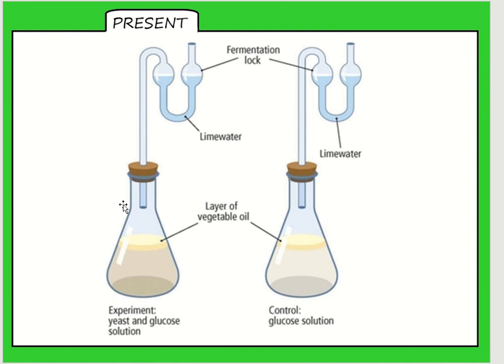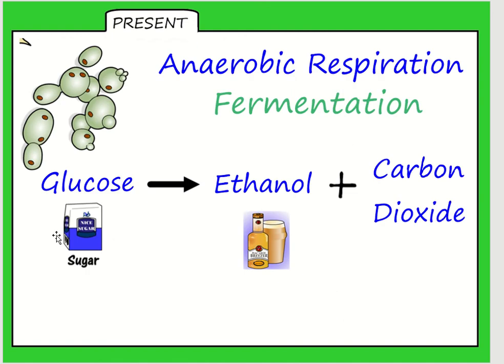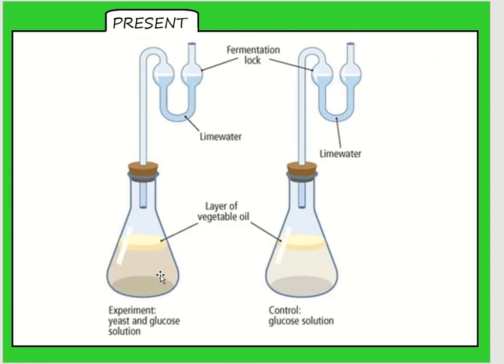In this first one, the yeast will respire anaerobically or ferment and they will convert that glucose into ethanol and carbon dioxide. Pressure will build up in that liquid and the carbon dioxide gas will bubble through the layer of vegetable oil, move up this tube, and then it will come out through the lime water. This is what I've got a video of.